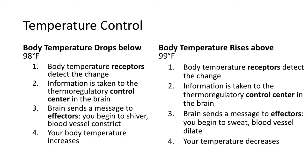Let's look closer at what happens when body temperature drops. Let's say it's very cold outside and you forgot your coat — your body temperature starts to drop below 98 degrees Fahrenheit. Your body temperature receptors pick up on that change and take the information to the thermoregulatory control center in the brain. The brain sends a message to the effectors: you begin to shiver, muscles contract, and your blood vessels constrict to preserve heat. As a result, your body temperature starts to rise.